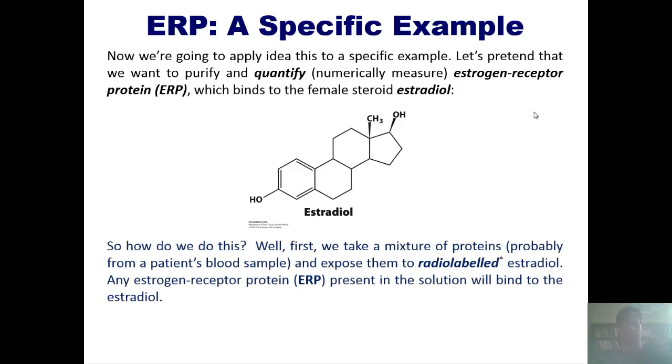Well, what you could do is take a mixture of this protein, probably by taking a blood sample from a patient, and you then put that solution in a test tube or something. Now, you should understand that ERP is a protein that binds very tightly and very specifically to this molecule estradiol. What does that mean? Well, it means that if you have a solution, such as a patient's blood that has a bunch of ERP in it, and you throw in some estradiol, all of that ERP is going to get bound up or bind all of that estradiol.